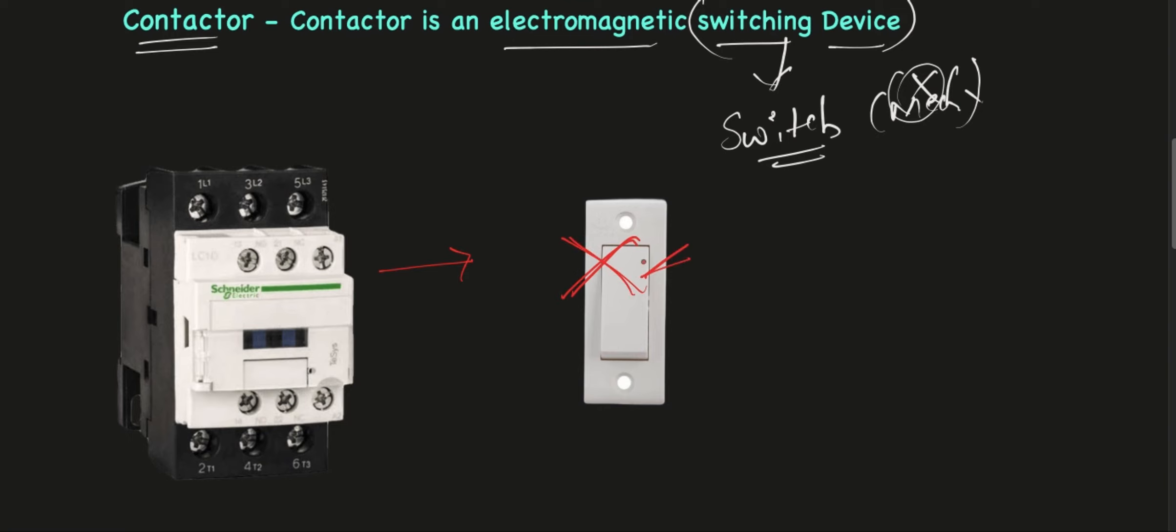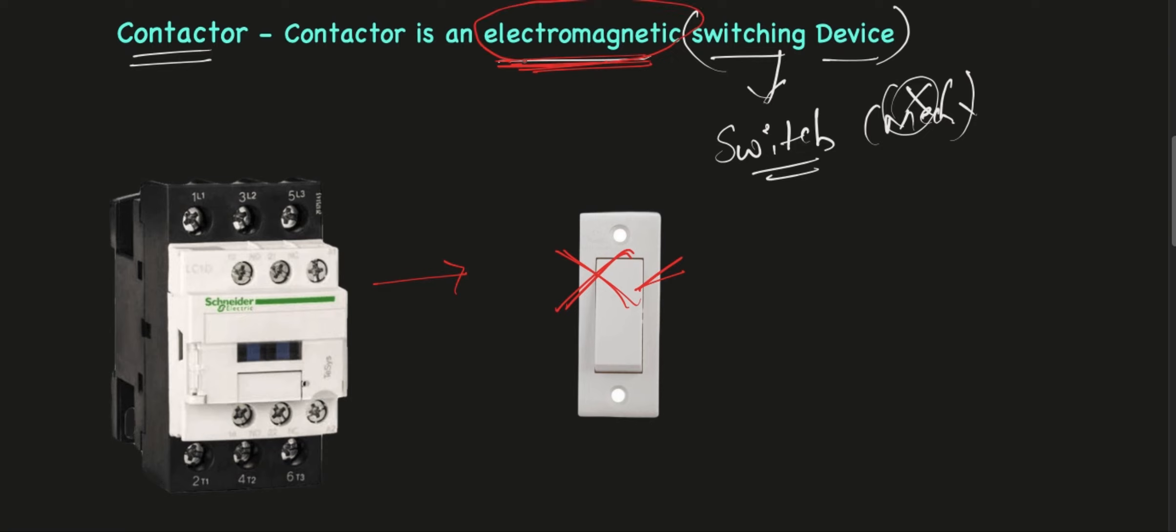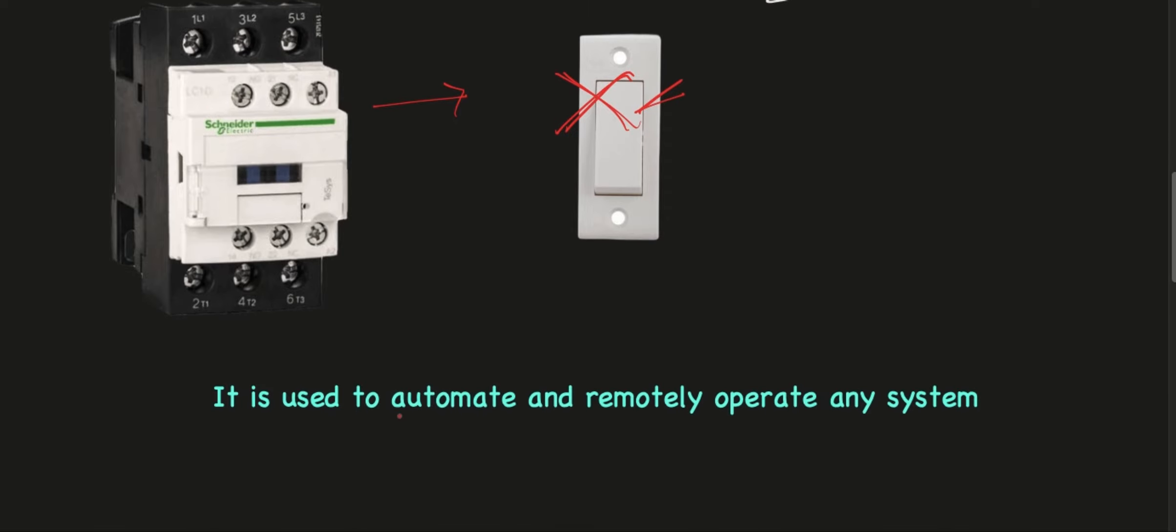The word electromagnetic is very important. Due to this electromagnetic feature we can use a contactor to automate our system. A contactor is used to automate or remotely operate any system.